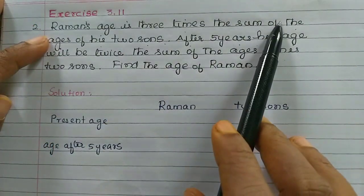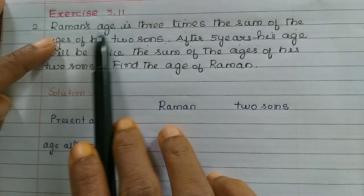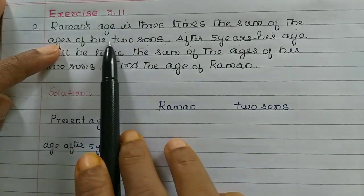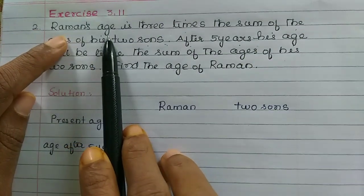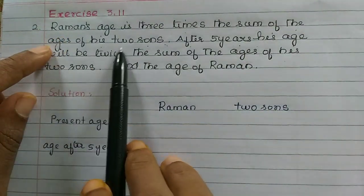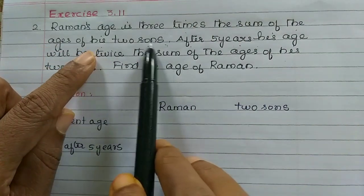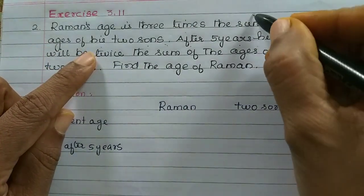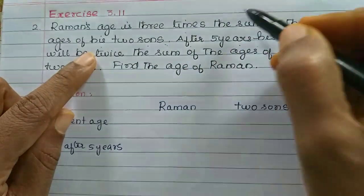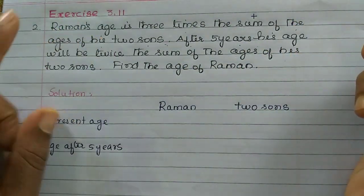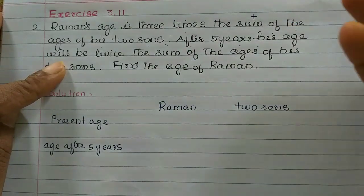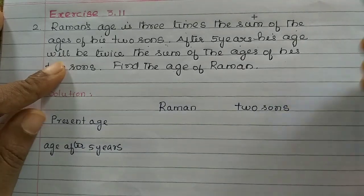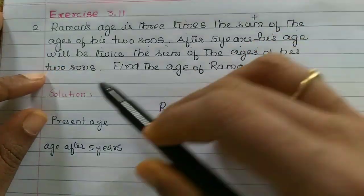In the first line, Raman and two sons are there. Raman's age is 3 times the sum of the ages of his 2 sons. If you add the ages of his 2 sons, that is Raman's age. After 5 years, his age will be twice the sum of the ages of his 2 sons.